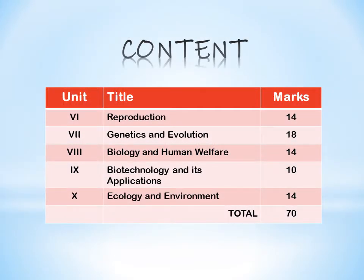The syllabus of biology of class 12 comprises of five units, and I request you to note down the syllabus and also its marks. Unit 6 reproduction comprises of 14 marks. Unit 7, genetics and evolution, comprises of 18 marks. Unit 8, biology and human welfare, comprises of 14 marks. Unit 9, biotechnology and its application, comprises of 10 marks. Unit 10, ecology and environment, comprises of 14 marks. The total marks is 70 and the rest 30 marks will be under the practical.